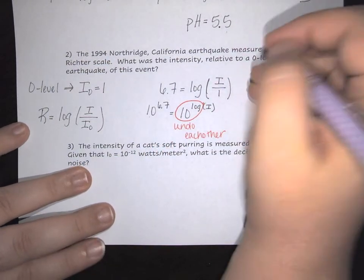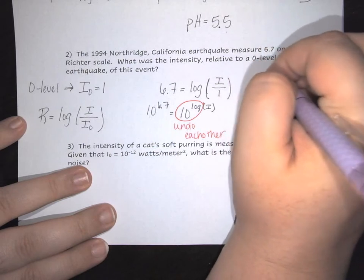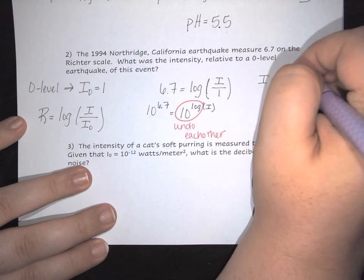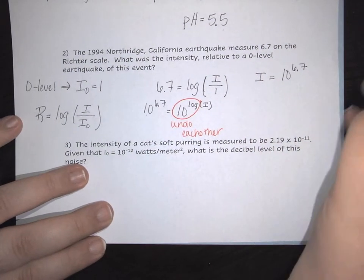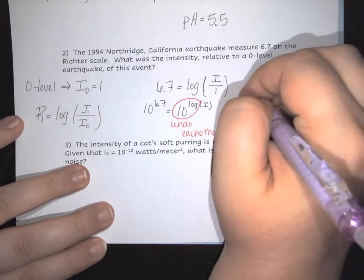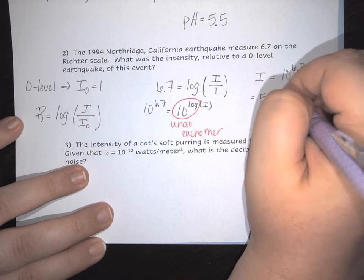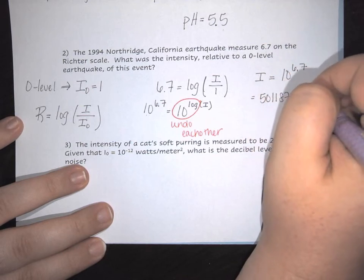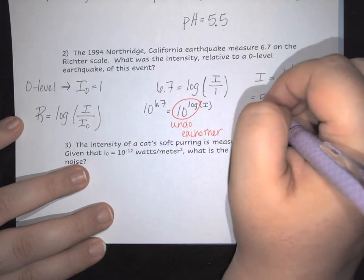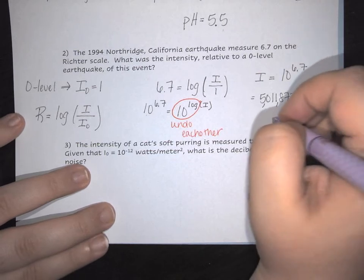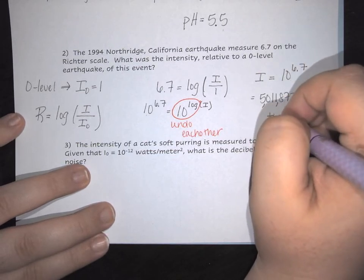What we'll end up finding is that our intensity is 10 to the 6.7, which equals 5,011,872.34. So essentially, it is 5 million times stronger.